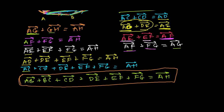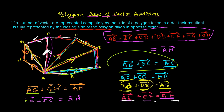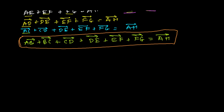And this is the statement of the polygon law of vector addition that we have just proved. If a number of vectors are represented completely by the sides of a polygon taken in order, the resultant is fully represented by the closing side. So AB + BC + CD + DE + EF + FG + GH = AH, which is the closing side — and that's what we proved here.